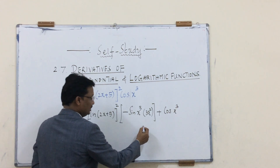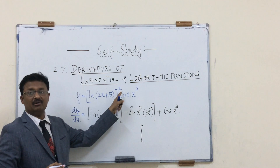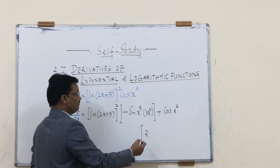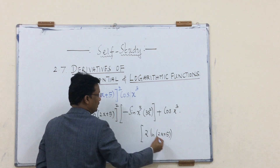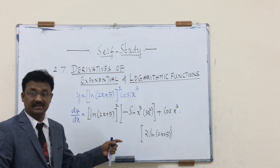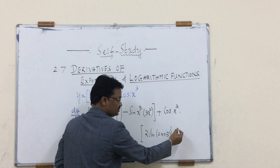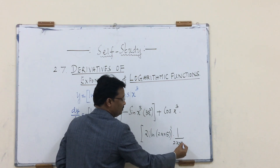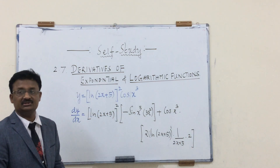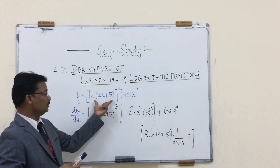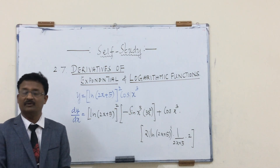The derivative of [ln(2x+5)]² is 2 times ln(2x+5) to the power 1, applying the power rule, times the differentiation of ln(2x+5), which is 1/(2x+5) times 2 — using the chain rule again. That is the derivative of the combination of logarithmic and trigonometric functions. Understand — have a nice day, thank you.